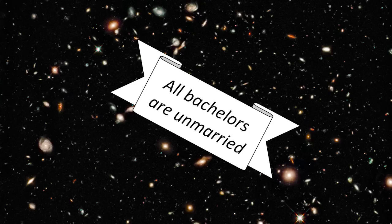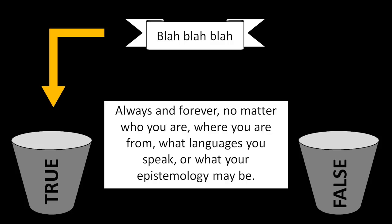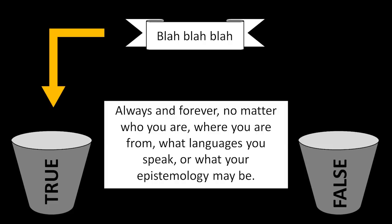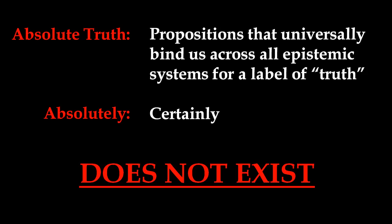Truth is not a physical entity unto itself, but simply a label given to ideas in accordance with made-up goals. No proposition can ever be absolute in this sense because no epistemic system is universally binding us to consistently label a given proposition as true. Absolute truth, therefore, absolutely does not exist.